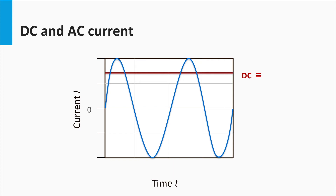AC, or alternating current, on the other hand, is the flow of electric charge such that it constantly reverses directions. The usable form of an AC power is a sine wave. As a thought, DC signals can be looked upon as a signal with zero frequency.